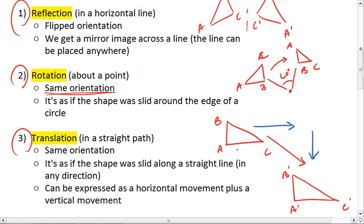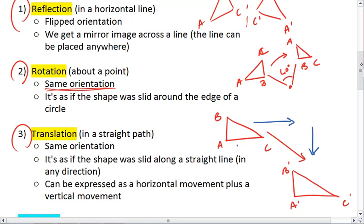So the only one that has a flipped orientation is reflection. And that would mean that if we wanted to stack our original image and the reflected image on top of one another, we would have to actually pick up one of the shapes and flip it over so that they stack right on top of one another. That doesn't happen with rotation and translation because their orientations stay the same.